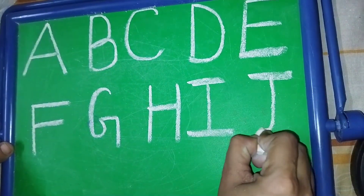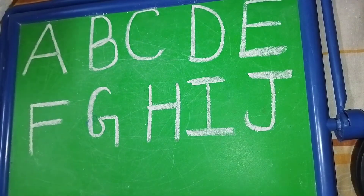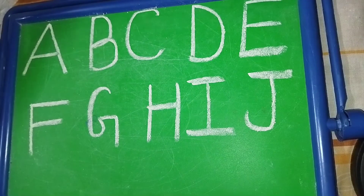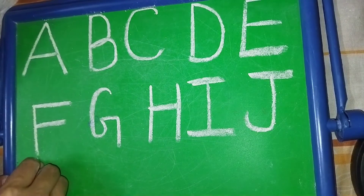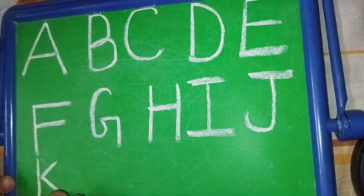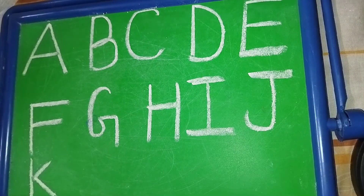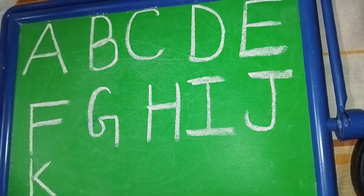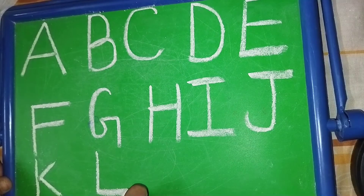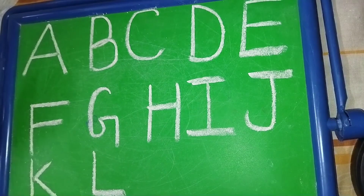J. J for juice. Juice means juice. K. K for kite. Kite means patang.